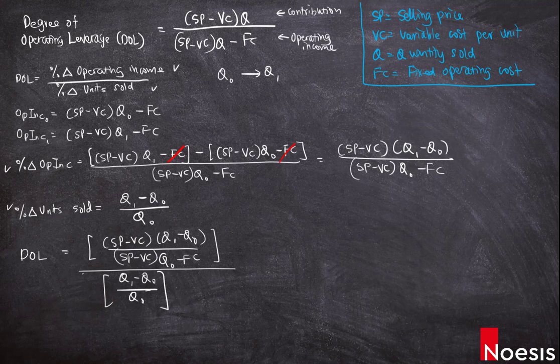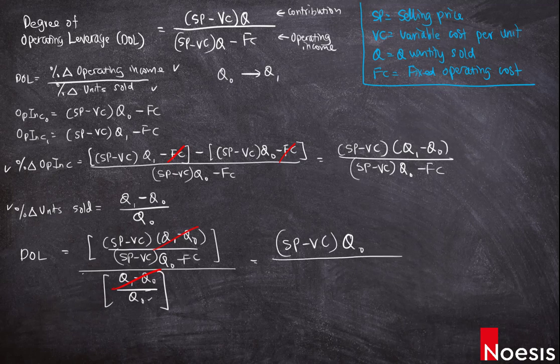Notice that (Q₁ − Q₀) in the numerator cancels with (Q₁ − Q₀) in the denominator, leaving only Q₀, which multiplies to the numerator. This simplifies to (SP − VC) × Q₀ divided by operating income — and that's how the formula is derived.